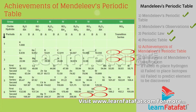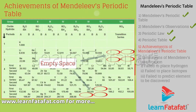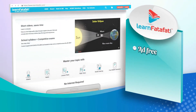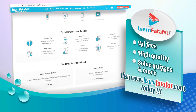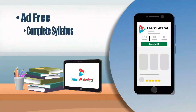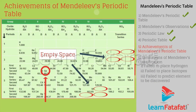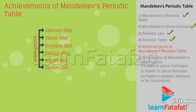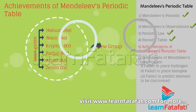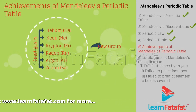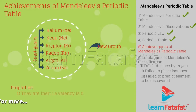Mendeleev left some gaps in the periodic table and boldly predicted the existence of elements that were to be discovered. For example, gallium was discovered later and named as Eka-Aluminium. In a periodic table, inert gases could be placed in a new group since they have different properties from existing groups. Their properties: they are inert, valency is zero, and all are gases.